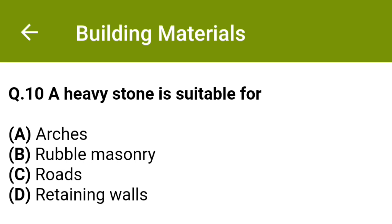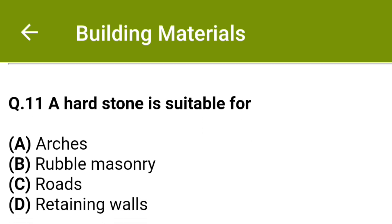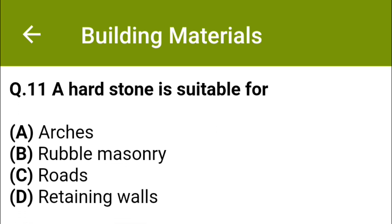A heavy stone is suitable for Option A arches, Option B rubble masonry, Option C roads, Option D retaining walls. The correct answer is Option D, retaining walls. A hard stone is suitable for Option A arches, Option B rubble masonry, Option C roads, Option D retaining walls. The correct answer is Option B, rubble masonry.